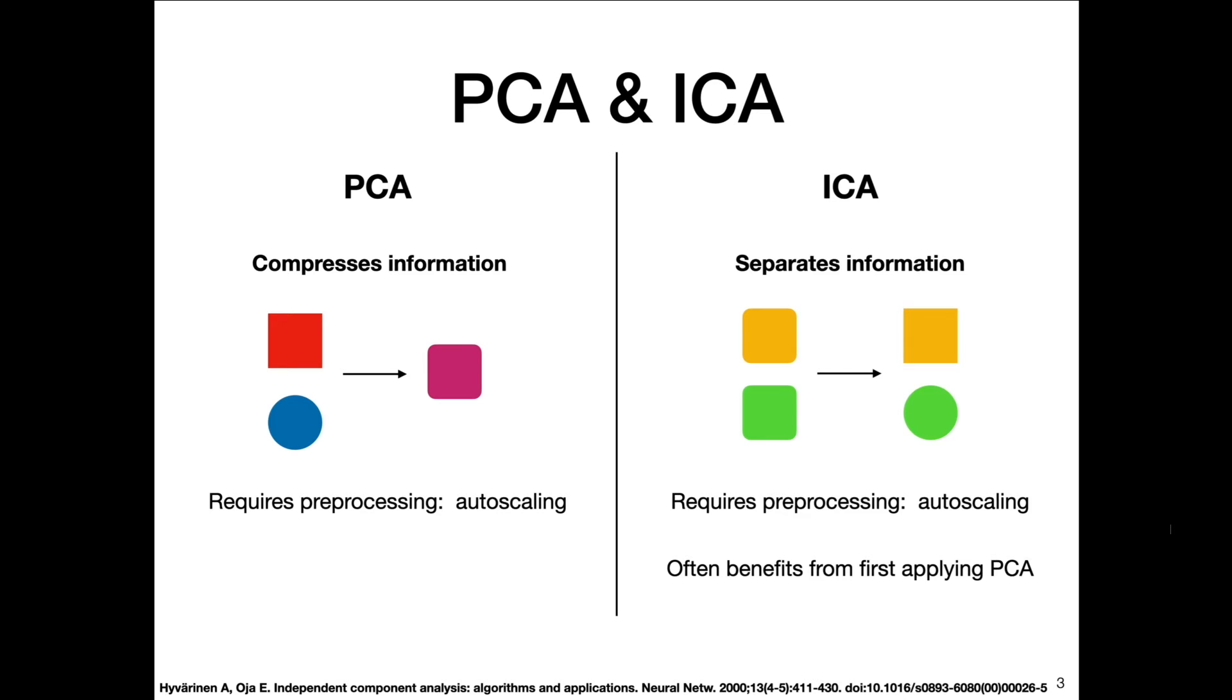A commonality between PCA and ICA is autoscaling. This is a critical part of the pre-processing. Autoscaling is for each variable, you have to subtract the average of that variable and divide each element by the standard deviation of that variable. That's one of the reasons why it's typically advantageous to apply PCA to your data set before applying ICA because all the pre-processing is already handled for you. PCA will clump all the information together, the correlated variables, and then ICA will come in and separate out independent drivers if it's applicable.